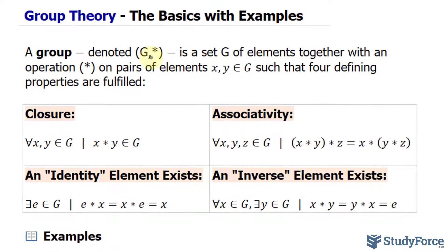A group is a set G of elements together with an operation, which you can replace with a plus or multiplication symbol, on pairs of elements x and y within G, such that four defining properties are fulfilled.